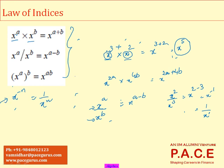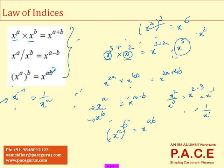Another important law of indices: when x to the power of a is raised to some other power b, the result is x to the power of a times b — just multiply the two exponents. So x squared, whole to the cube, means x squared is multiplied three times, which gives x to the power of 6. Remember, the power is multiplied.